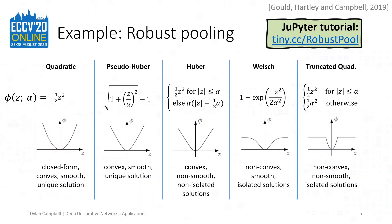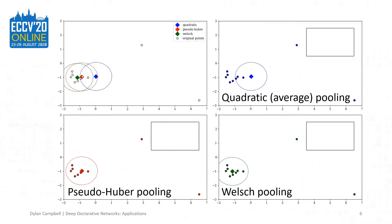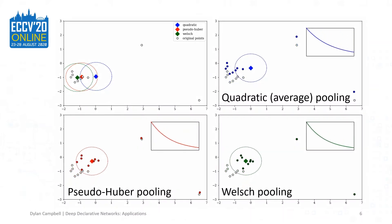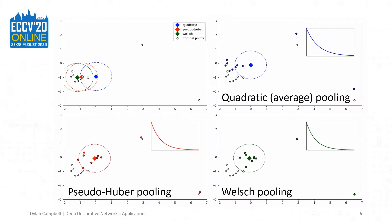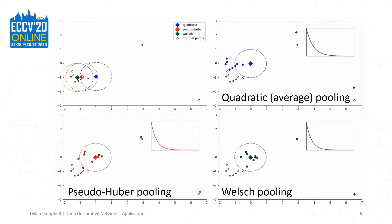A Jupyter notebook tutorial is available at the given link, where we implement these layers and investigate their properties. Here we show an example of robust vector pooling, where the overall loss function is the squared error — that is, we aim to drive the robust averages to zero. Notice that the outliers have little effect on the robust averages, and so do not get adjusted by gradient descent.